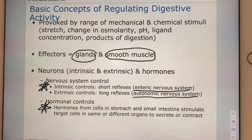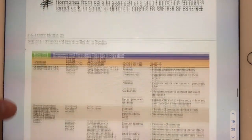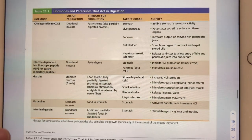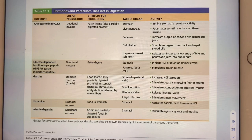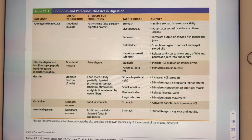Slides twenty and twenty-one are really one massive table requiring two slides, covering digestive hormones we'll learn as we go through the chapter. Just know that this table exists — we're not learning it quite yet; we'll come back to it later.